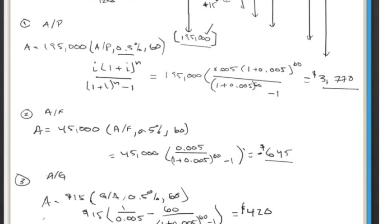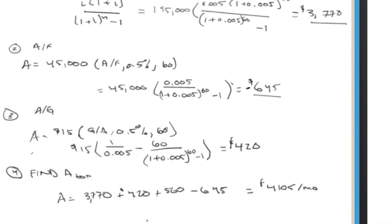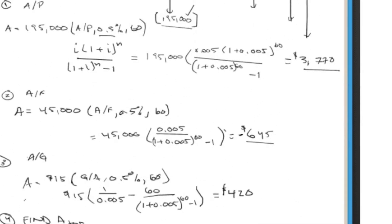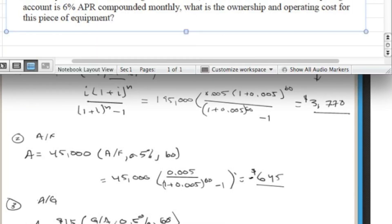To find the cost per hour of use, divide $4,105 per month by 156 hours per month (6 hours/day × 26 days/month), giving $26.31 per hour of use. That's the ownership and operating cost for this piece of equipment.